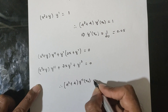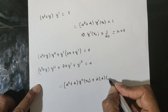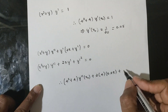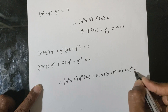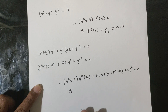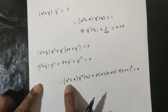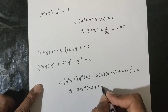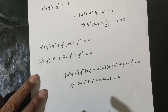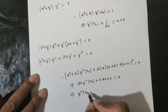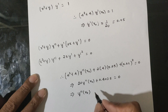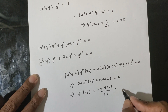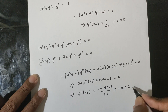Computing y double-dash of x₀: the expression yields 2 into 4 into 0.05 plus y-dash squared, which is 0.05 squared. This equals 0.16 plus 420 divided by 20. Therefore y double-dash of x₀ equals minus 0.4025 divided by 20.